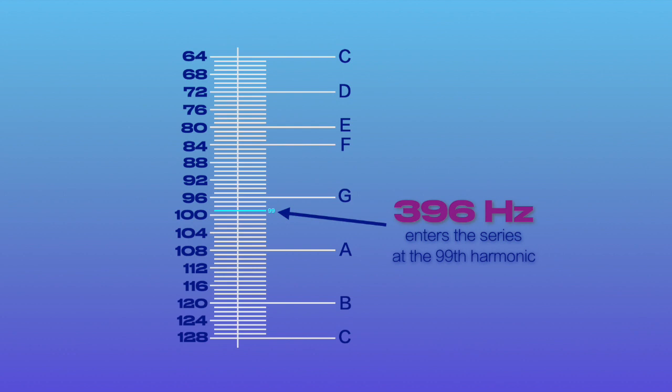Another interesting solfeggio frequency is Ut at 396 Hz. This frequency enters the harmonic series at the 99th harmonic, making it a sharp G note. It's also the 33rd microtone in the harmonic series.